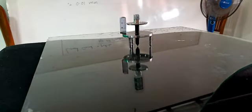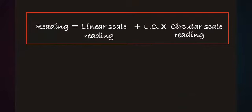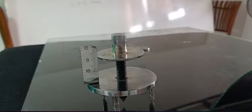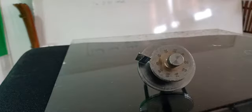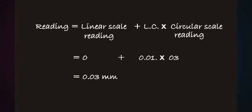The reading of zero position can be measured using that equation. The linear scale reading 0, 3 coincided circular scale divisions. So the reading of zero position is 0.03 millimeters.